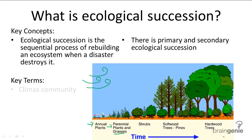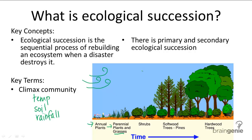The final community that emerges is called the climax community, and the different species that inhabit it are determined by physical factors like temperature, soil type, and rainfall. For example, a really dry environment where ecological succession occurs would produce a very different final community from a really moist environment.